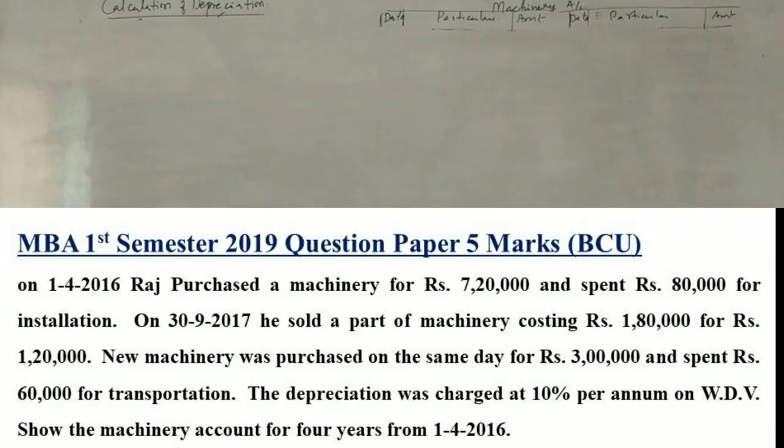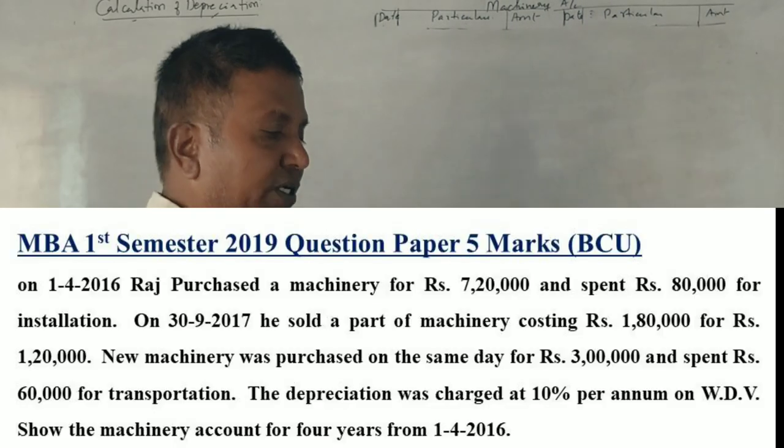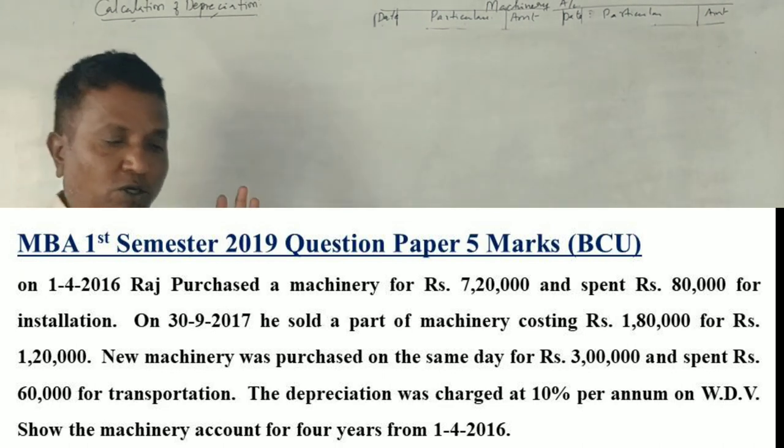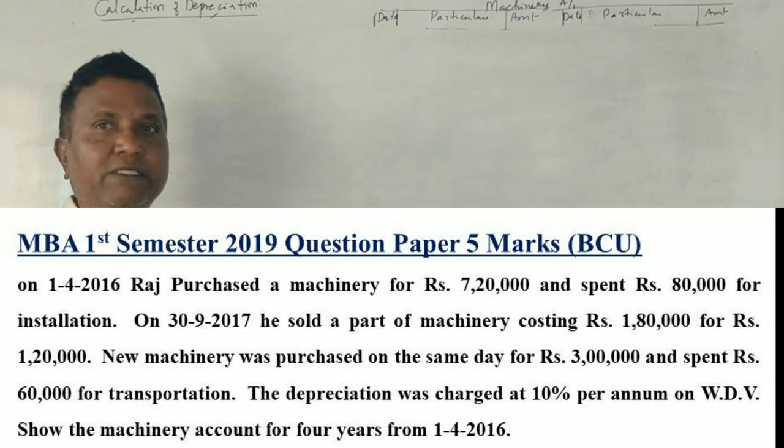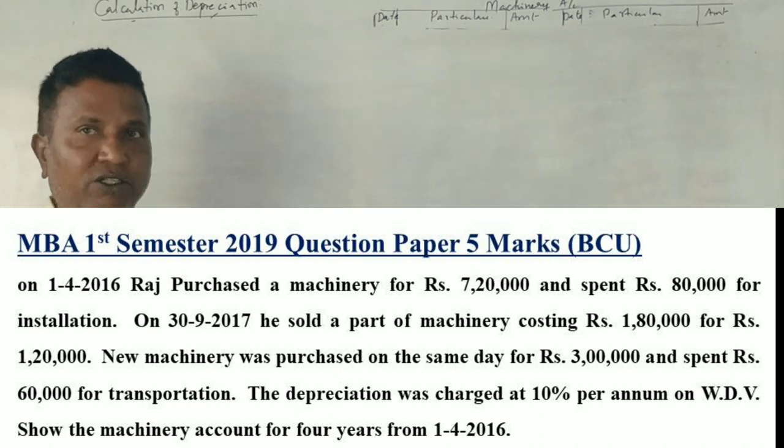The 2019 LBF SMCAT depreciation question. On 1st April 2016, Roth purchased machinery for $720,000 and spent $80,000 for installation. Total $800,000.